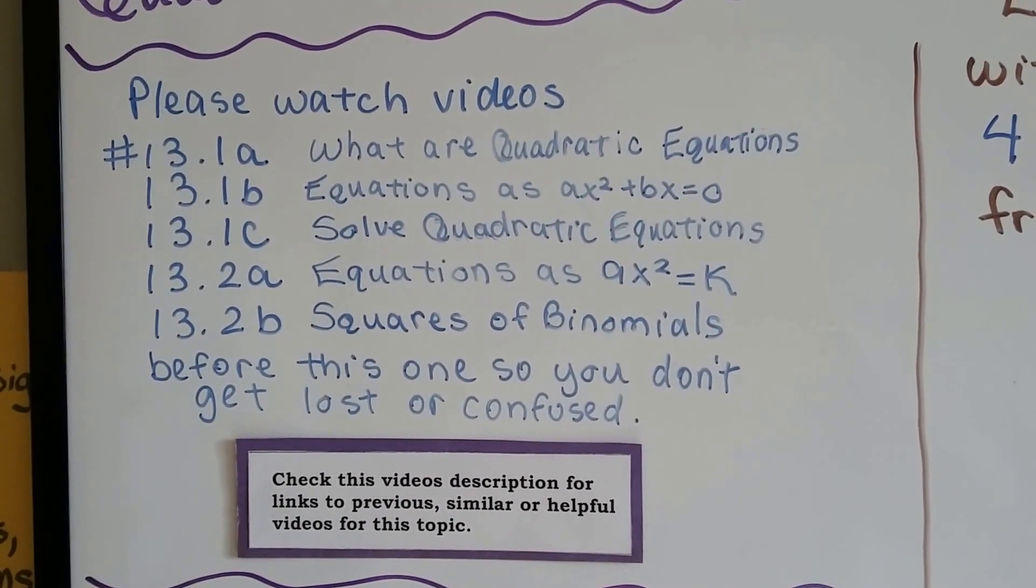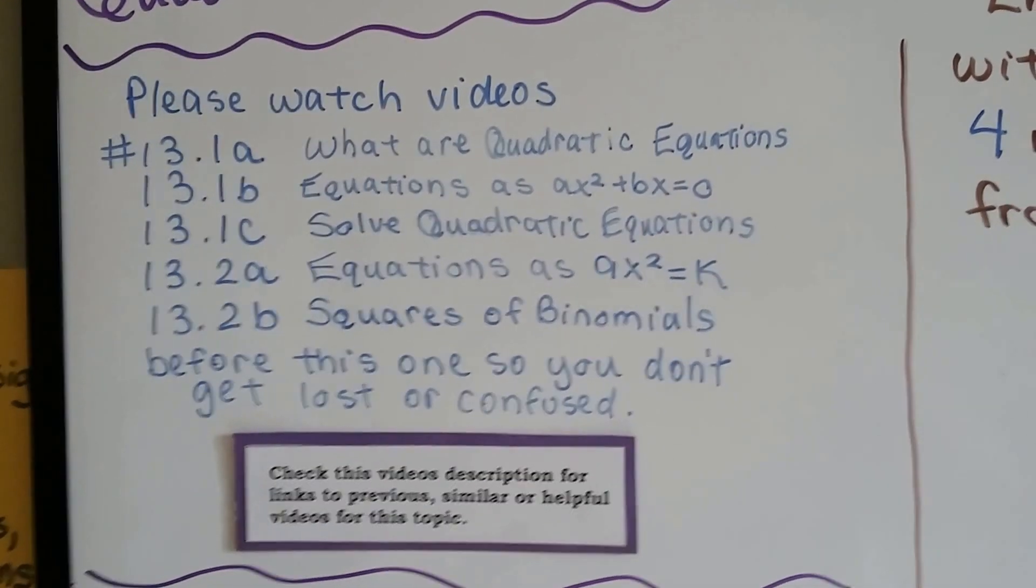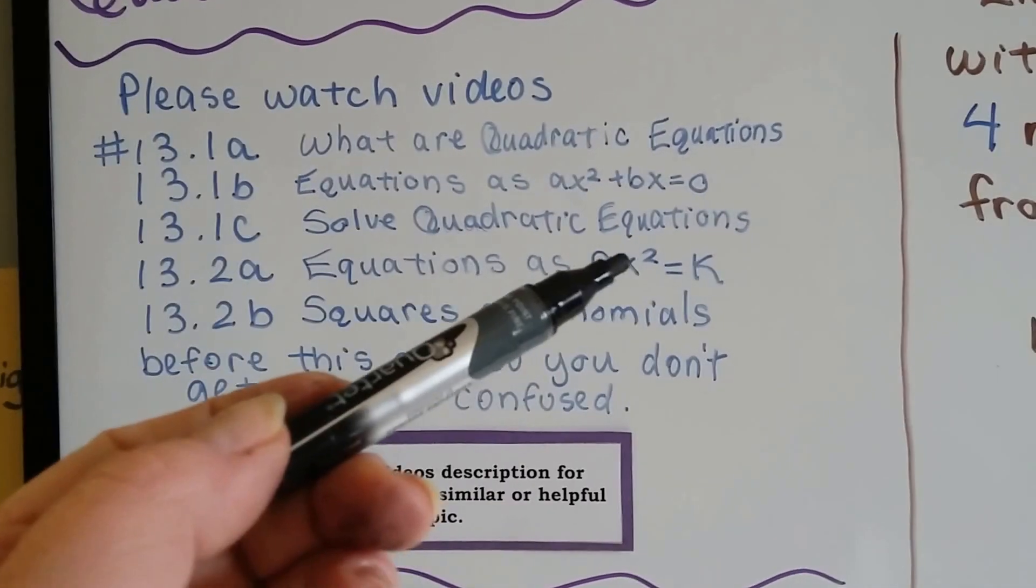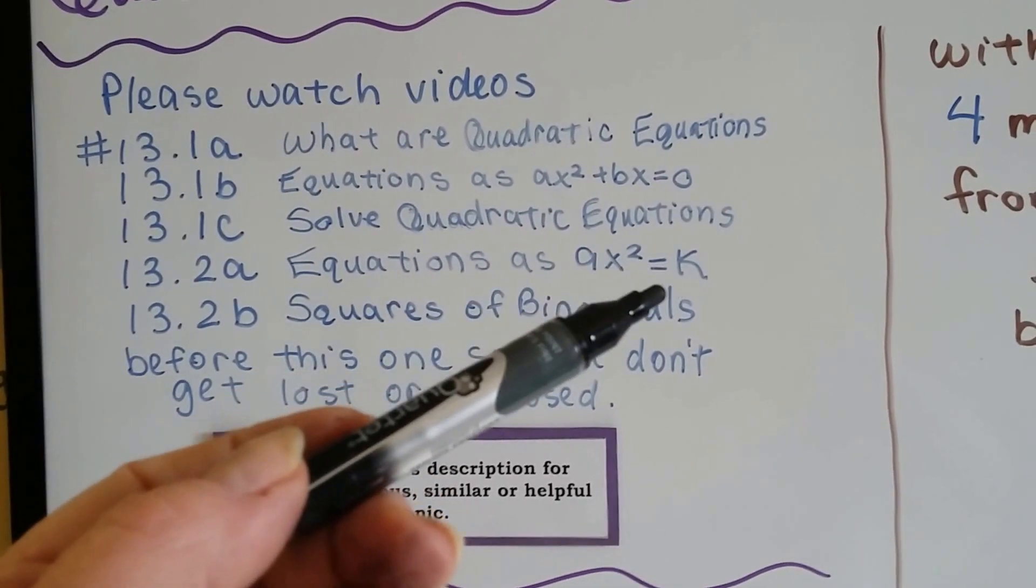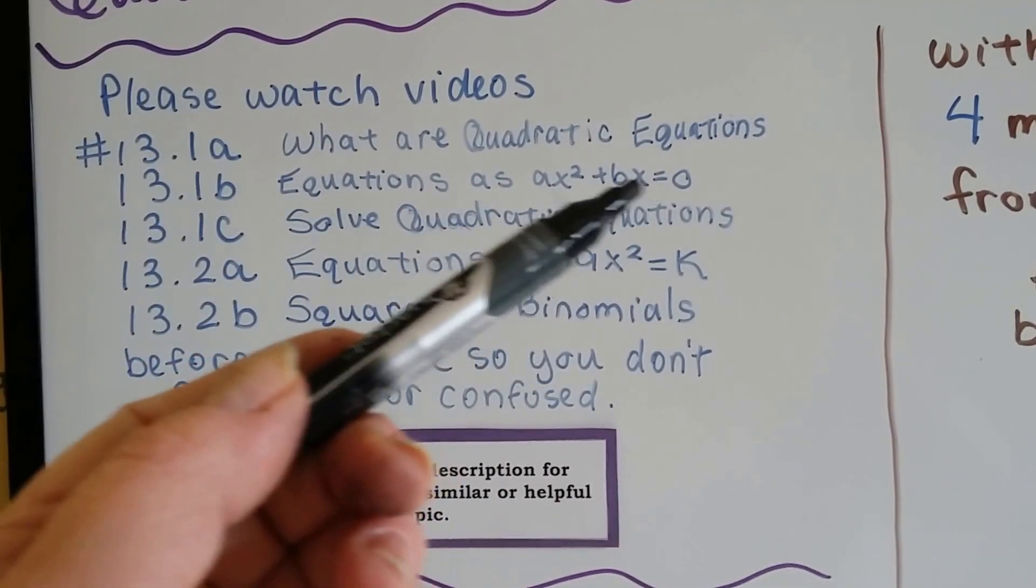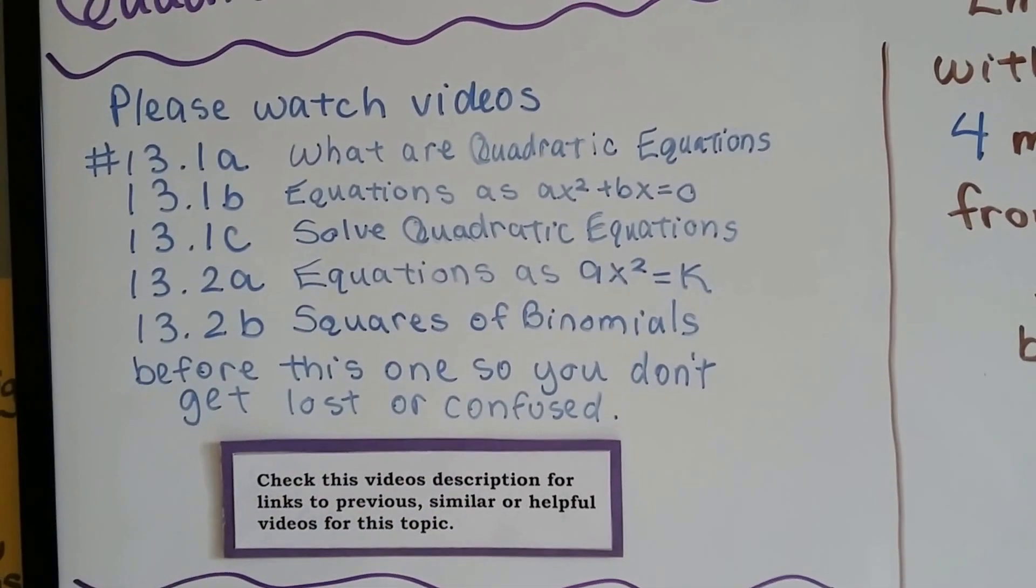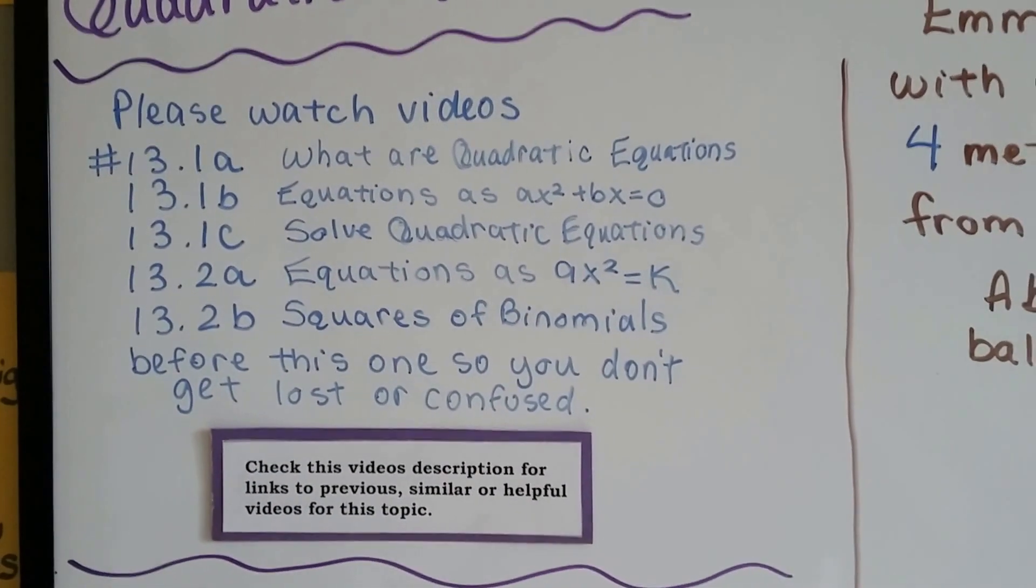Just go to this description, and you can click on the link and go right to them. You need to know about quadratic equations and squares of binomials, and if the equation is set just as ax squared equals k, if there's no plus c. You need to know how to do that before we continue.